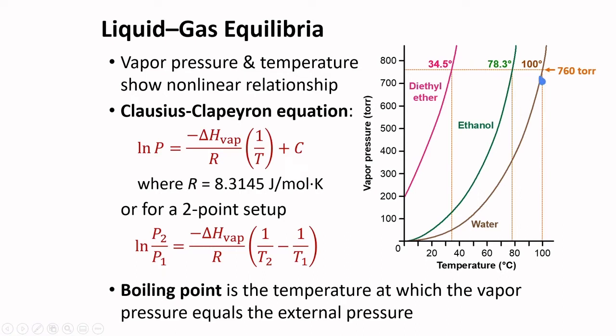You will also notice here that at any given temperature, the less polar diethyl ether has the highest vapor pressure of the three substances.